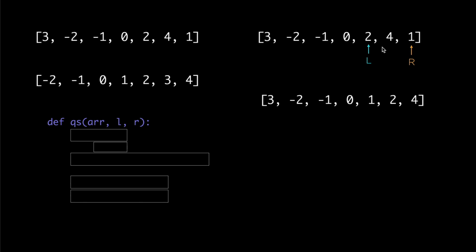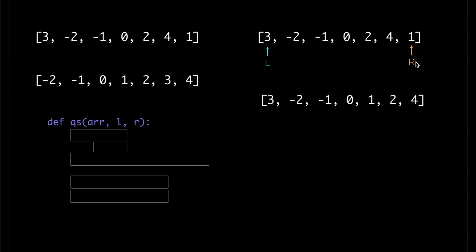So if you want to sort the entire array using qs, you just need to give the same array with l being 0, the index of the first element, and r being 6, in this particular case, the index of the last element. And to implement this recursive function qs, we'll first take care of the base case.